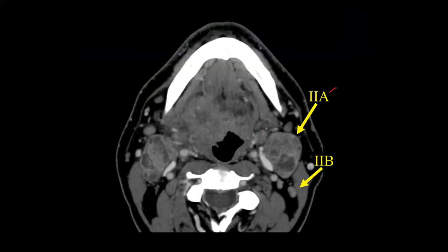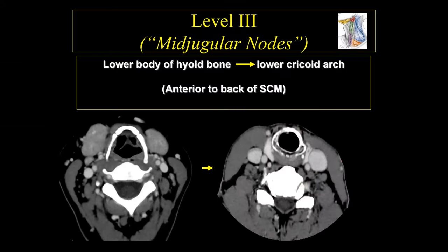The level 2 lymph nodes are divided into 2a and 2b, defined by the presence or absence of a fat plane between the lymph nodes and the internal jugular veins. If the level 2 lymph node is compressing the internal jugular vein with no fat plane, that is 2a. If there is a large fat plane between the lymph node and the internal jugular vein, that is 2b.